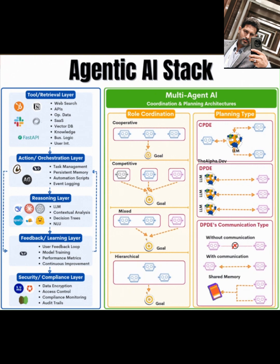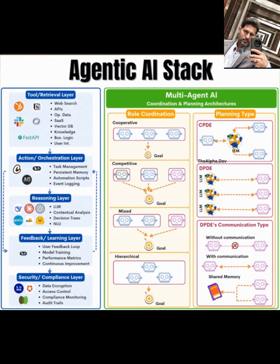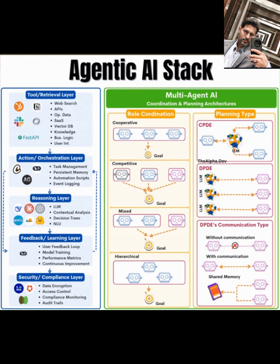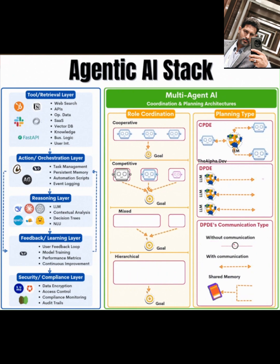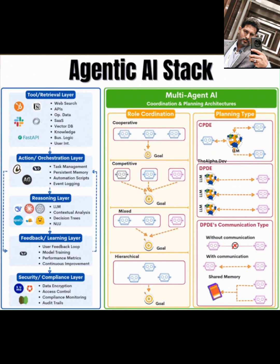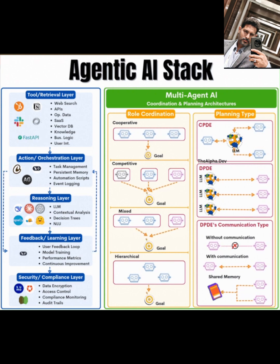Now let's zoom into the multi-agent AI coordination and planning section. When it comes to role coordination, you can opt for cooperative or competitive setups. In a cooperative model, agents work together toward a shared goal, while competitive agents might race to achieve individual objectives, optimizing for efficiency. For planning, I've outlined two types: CPDE — centralized planning, decentralized execution — where a central planner assigns tasks but agents execute independently, often using a target LLM for guidance. Alternatively, DPDE — decentralized planning, decentralized execution — allows each agent to plan and execute its own tasks, relying on distributed LLMs for decision-making.